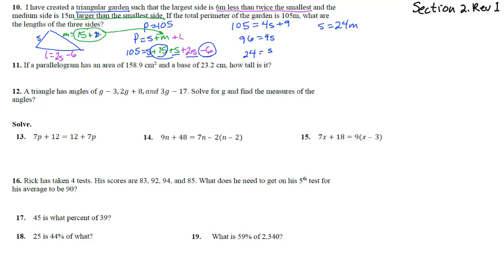So s is 24 meters. The medium side is 15 plus 24 equals 39 meters. The large side is 2 times 24 minus 6, which is 48 minus 6 equals 42 meters. Checking: 24 plus 39 plus 42 equals 105 meters. It works!